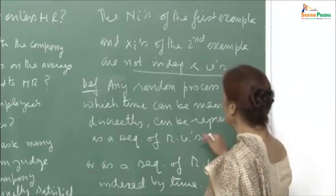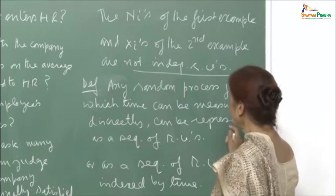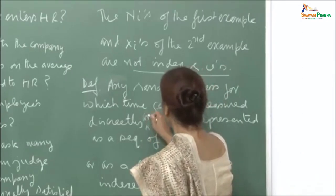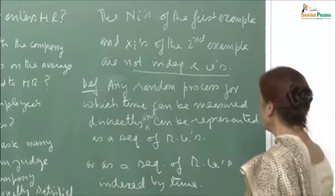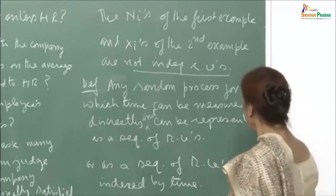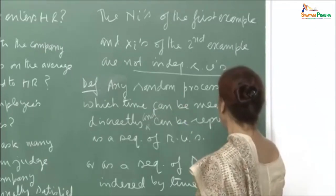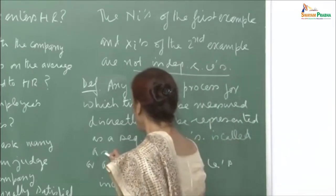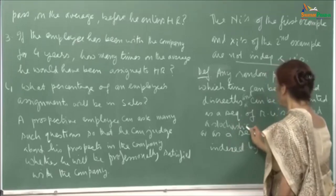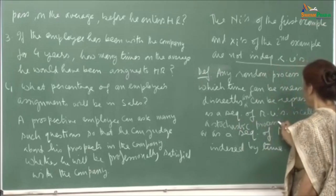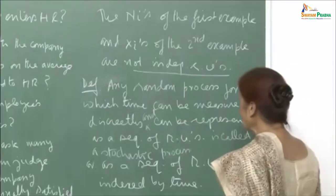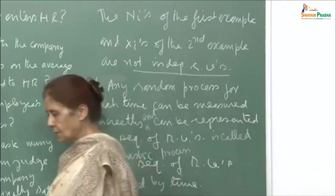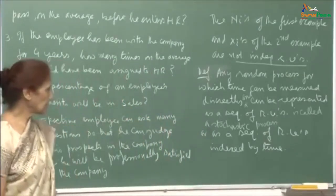We will now attempt to define a stochastic process. Any random process for which time can be measured discretely and can be represented as a sequence of random variables is called a stochastic process. Very simply, it is a sequence of random variables indexed by time. A stochastic process is evolving over time, and you want to look at its behavior.